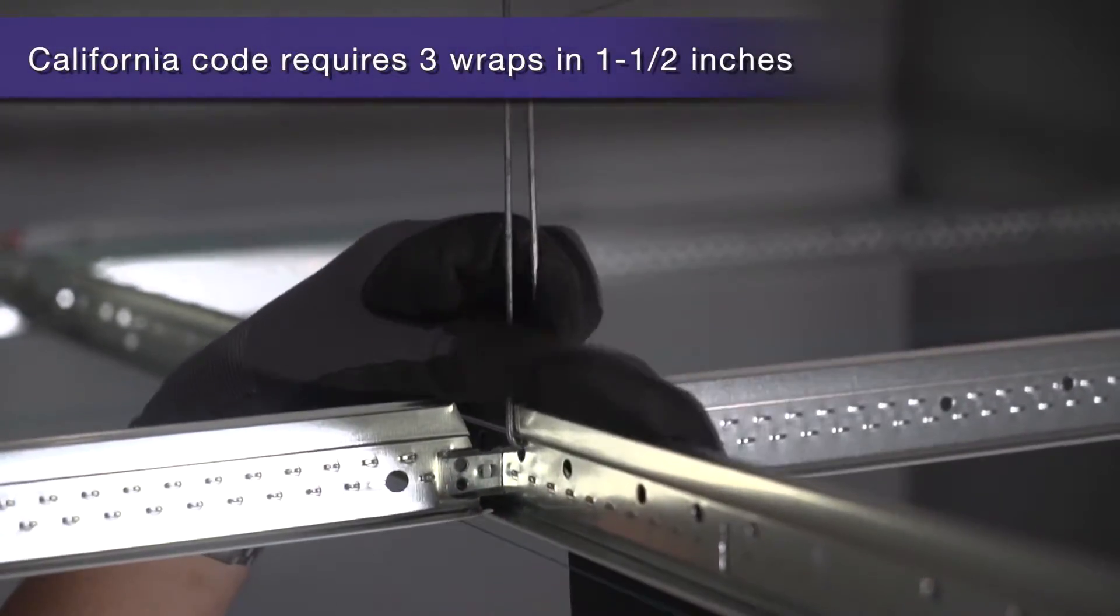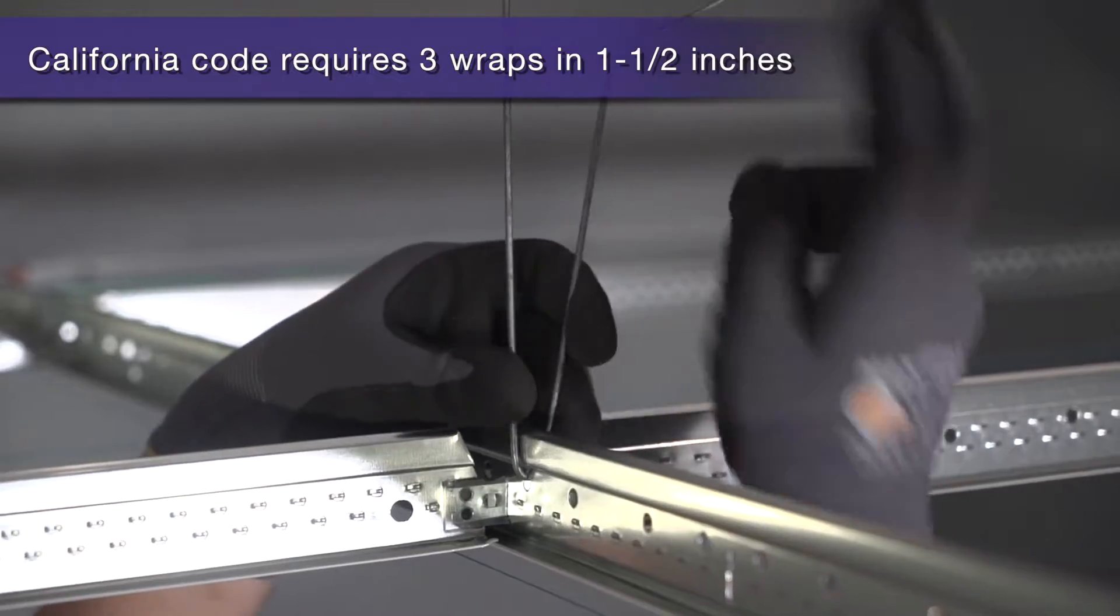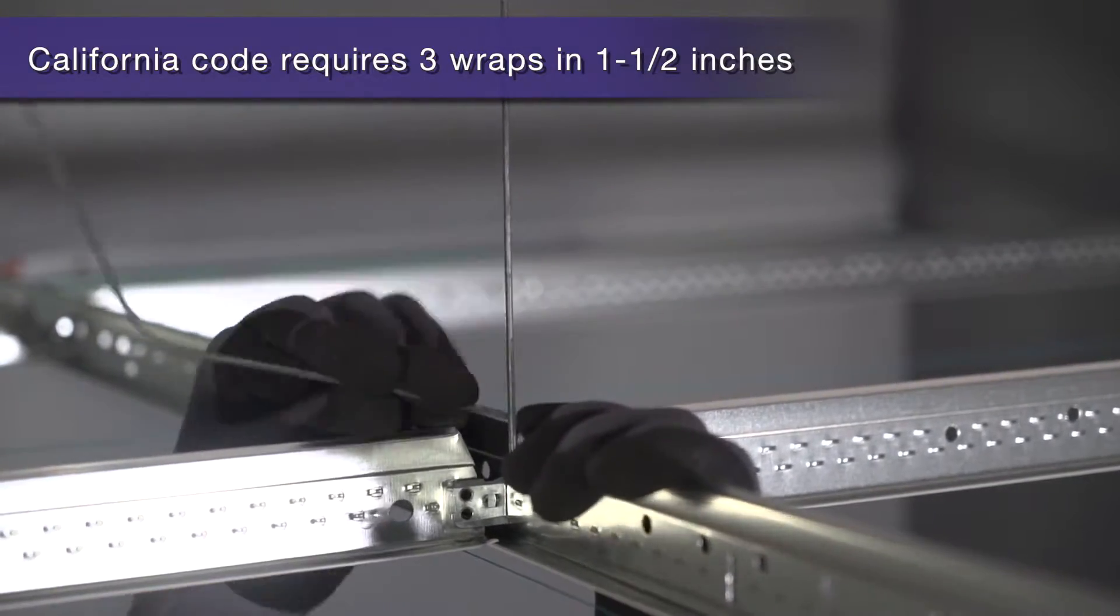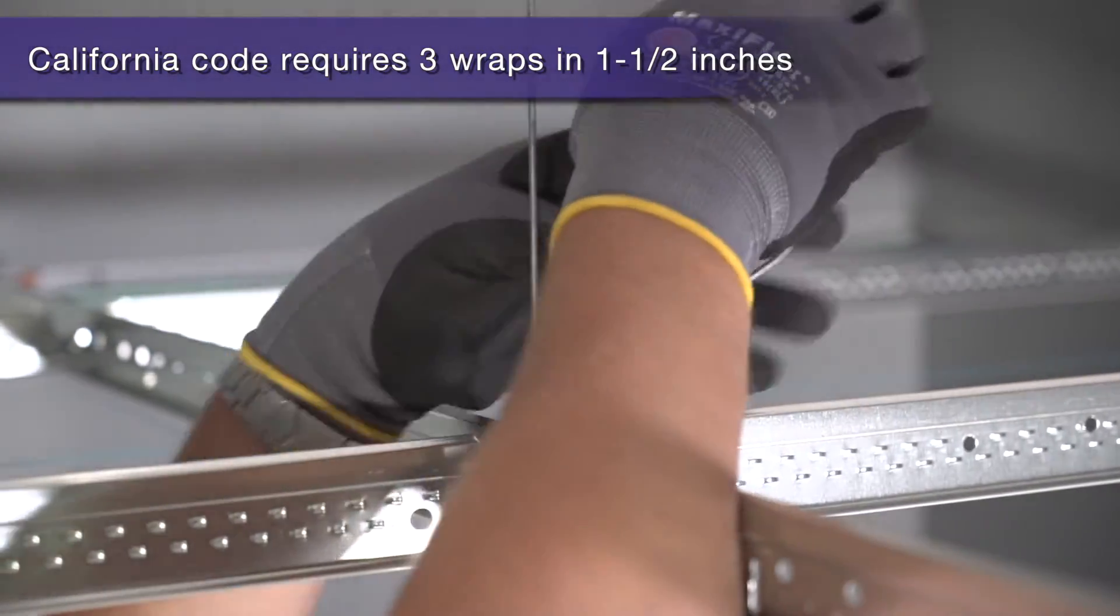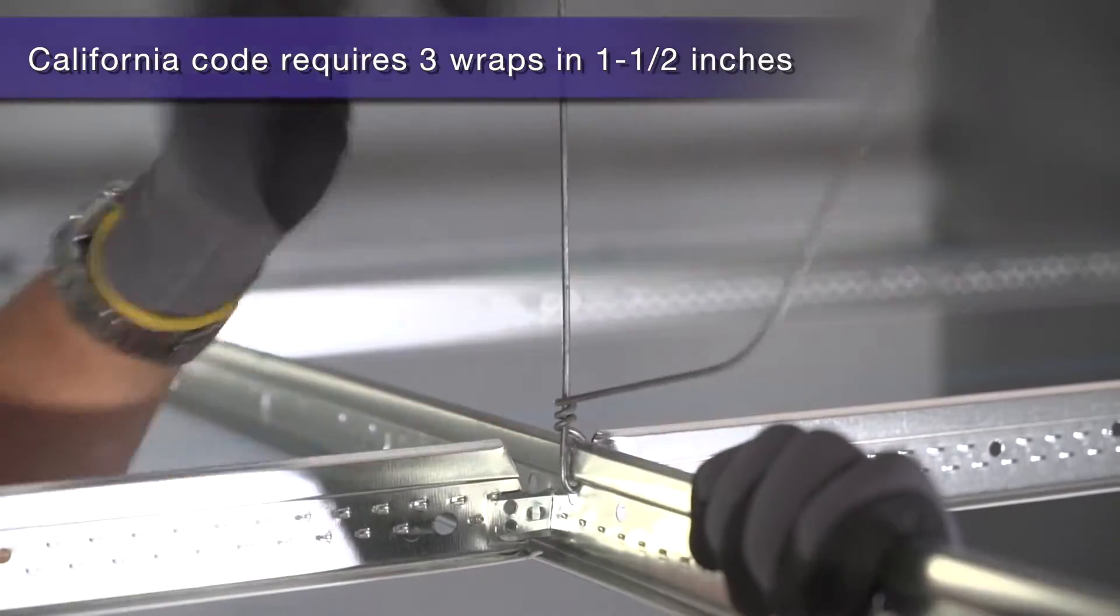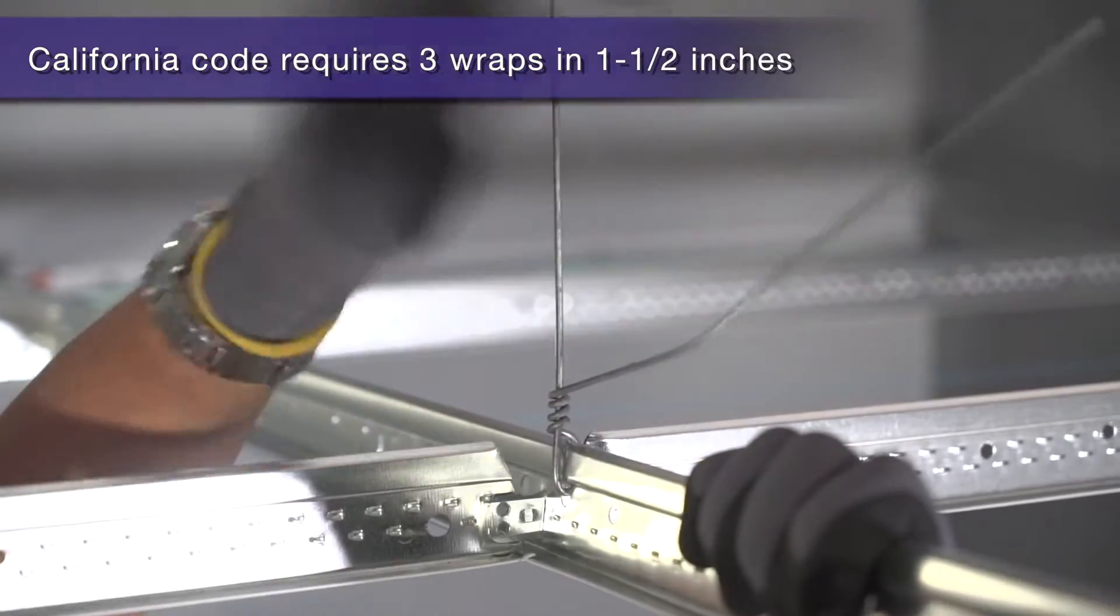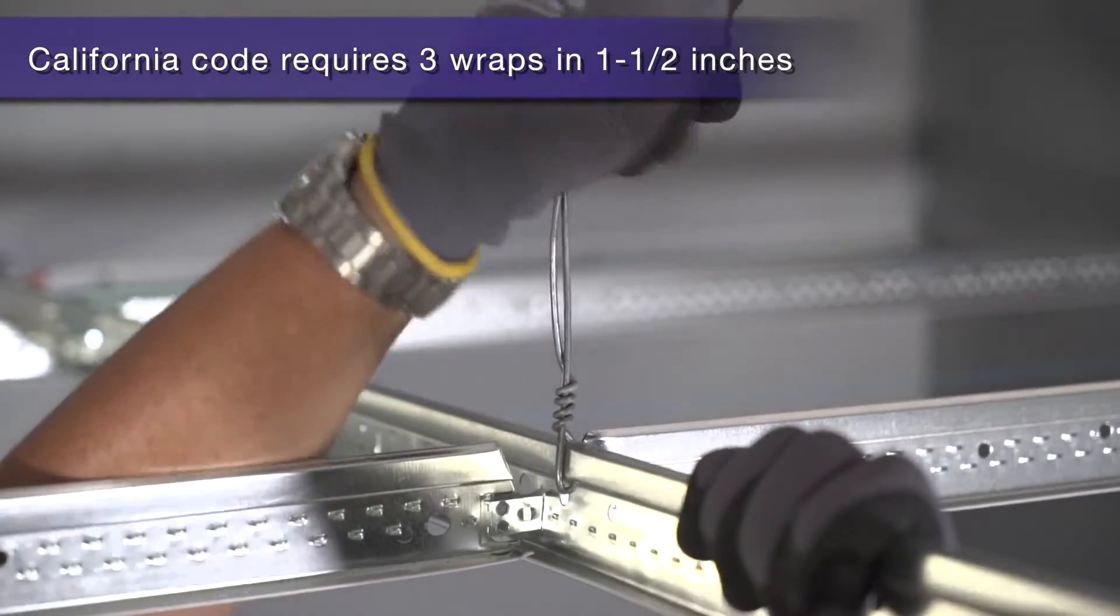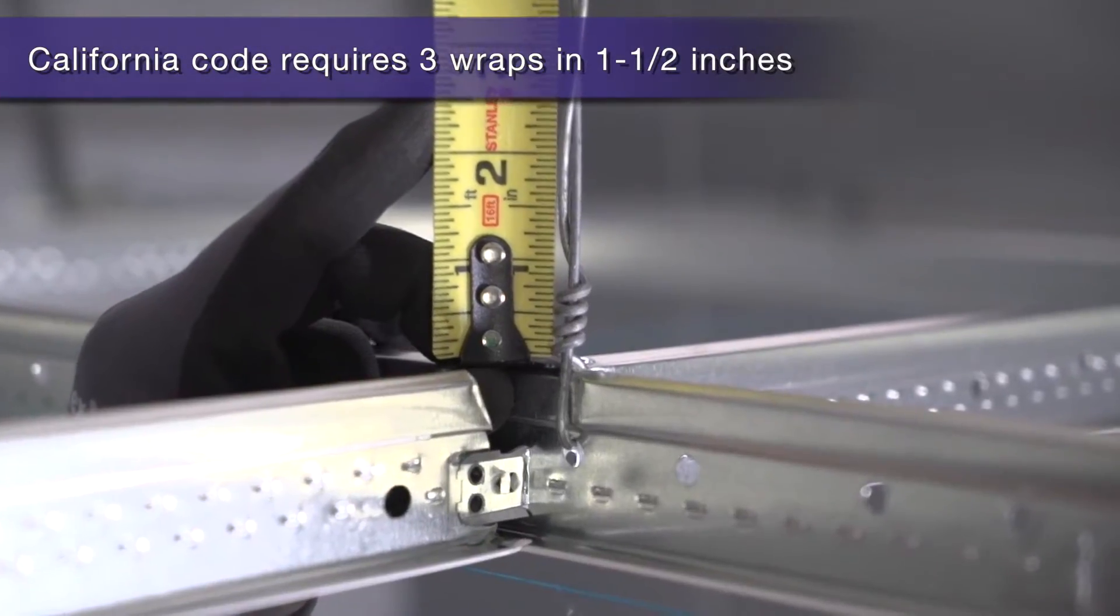Now, about wires. California code requires that all wires be tied with three wire wraps that occur within an inch and a half of each other. It helps if you bend the wire up to make a handle to grab as you perform these tight wraps. This is a good tight California wrap.